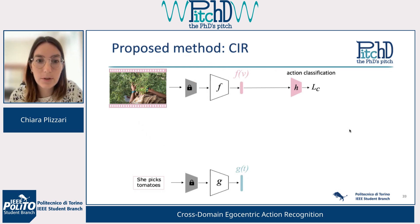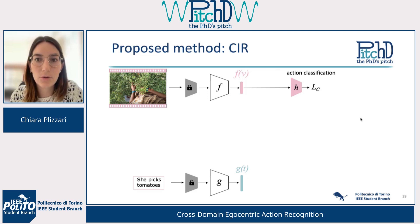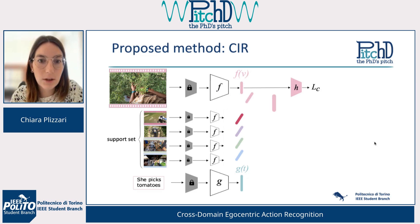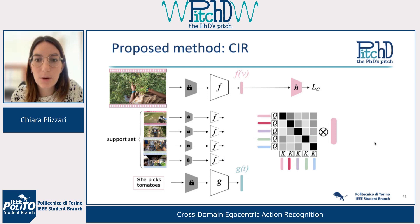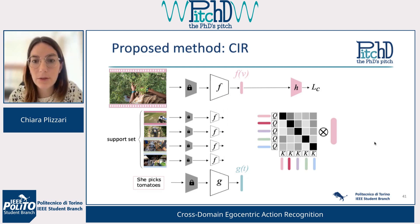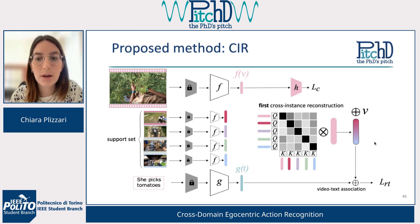The architecture is simple: we have an input video and the corresponding text narration, which we feed to two different feature extractors to obtain visual features and textual features. The visual features are used for action classification. We also have other videos in the batch from different scenarios or locations — we call these the support set. For each we extract a query and key embedding and compute the dot product between those, obtaining weights used to reweight the original video and produce a reconstruction. This reconstruction is used to train a video-text association loss.